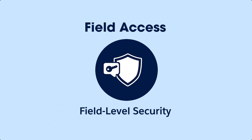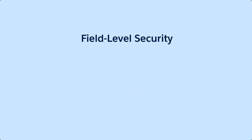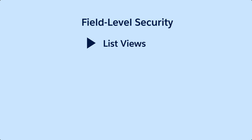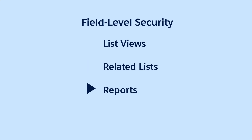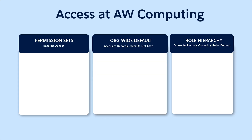Field Level Security allows you to control who can view and edit data — well, at the field level. In other words, Field Level Security controls the visibility and editability of fields in the app, including things like list views, related lists, reports, and search results. Let's review the current setup in AW Computing's Salesforce org.